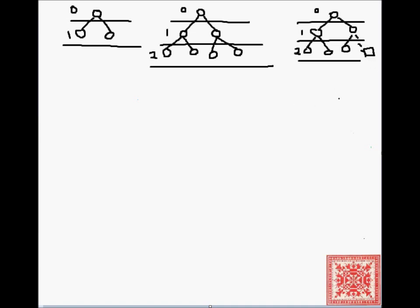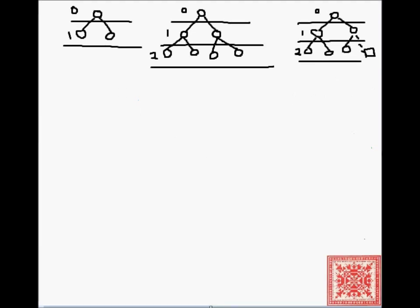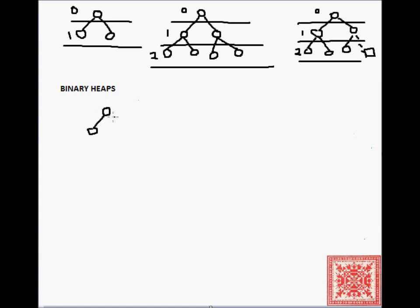Binary heaps are complete binary trees, but implementation-wise, when you think of heaps, sometimes they're called essentially complete binary trees where all of the positions on all the levels but the last one are filled, and the positions on the last level are filled with empty nodes. Those nodes exist but they don't have values, and those values are filled gradually going left to right, so some of the rightmost nodes may be empty.